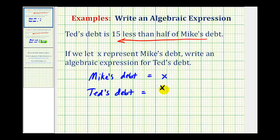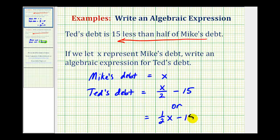If we have x and we divide by two, this gives us half of Mike's debt. But Ted's debt is fifteen less than half of Mike's debt, so from this expression we need to subtract fifteen. As mentioned, instead of having x divided by two, we could use the expression one half x minus fifteen. These two expressions are equivalent, both expressing fifteen less than half of Mike's debt when Mike's debt is equal to x.